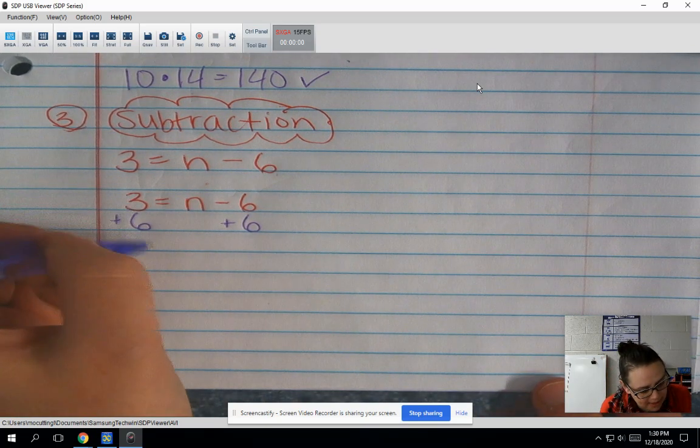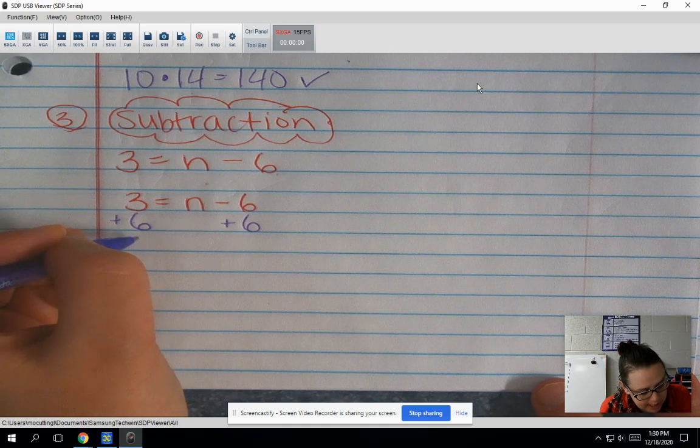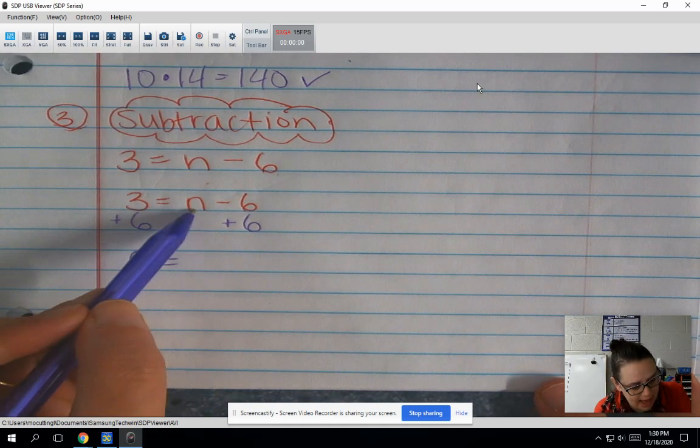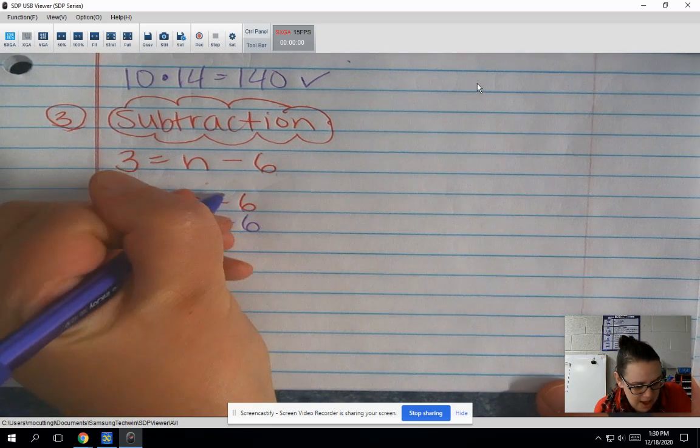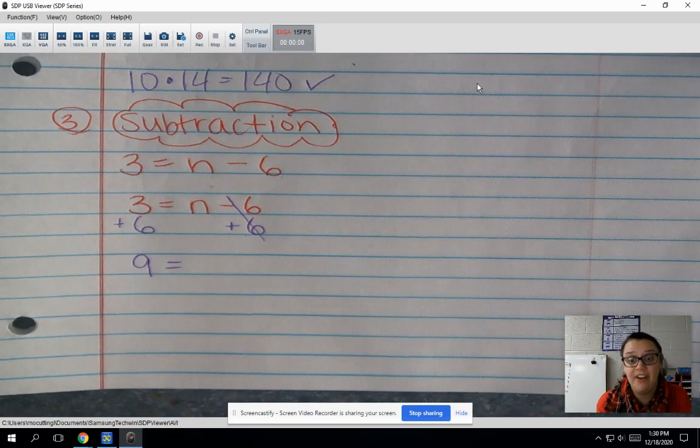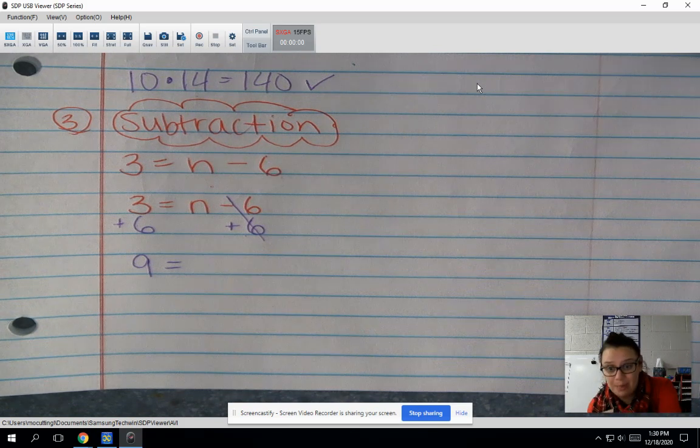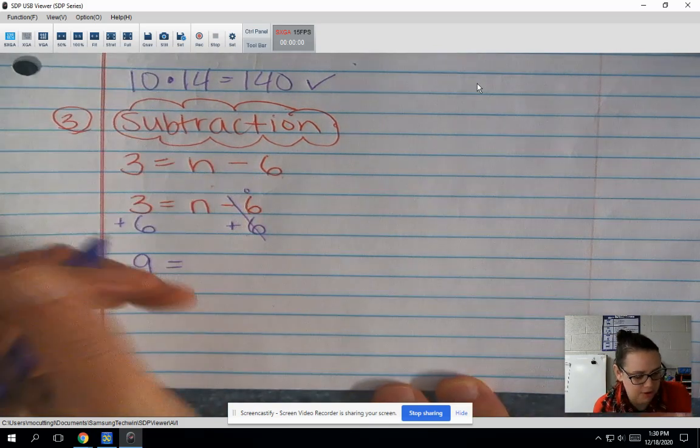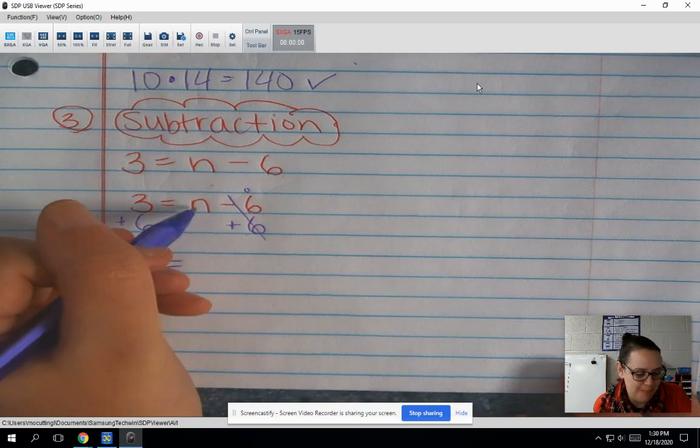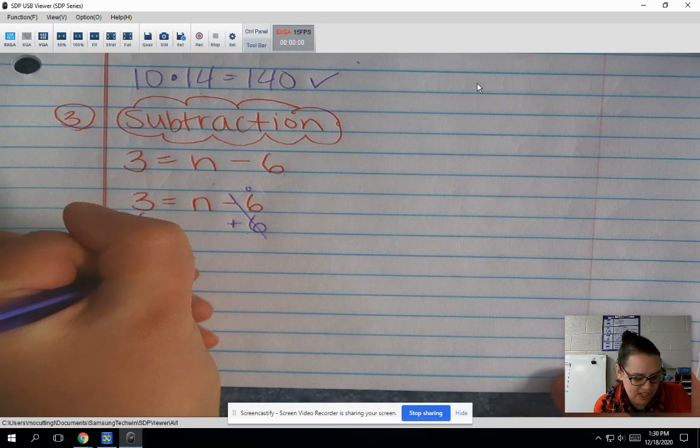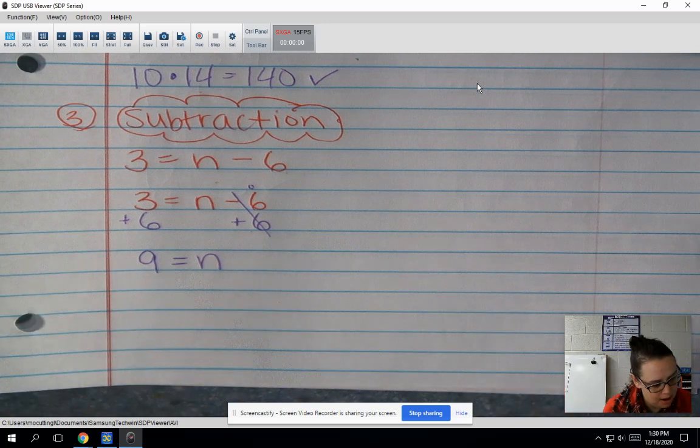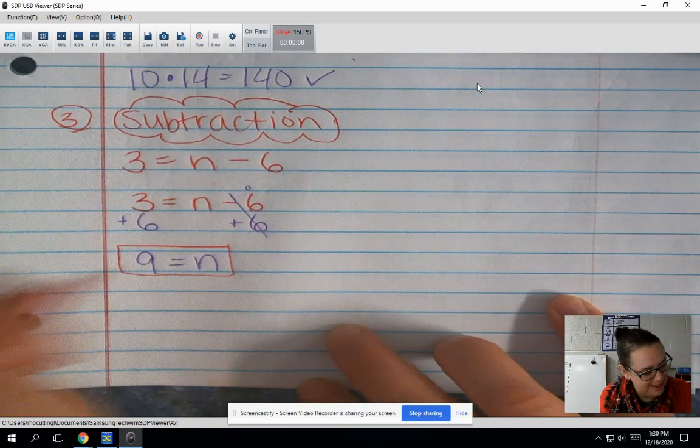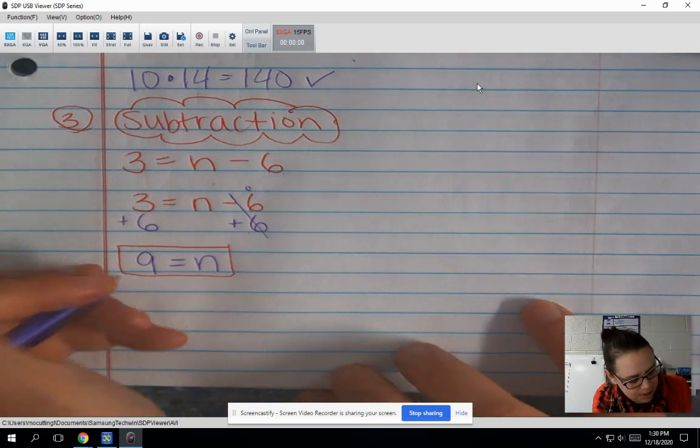So on my left side, 3 plus 6 gives me 9. On my right side, I have n minus 6, then plus 6. That part gives me 0. If I take 6 away and then put it back, I'm left with what I started with. I'm just going to put a little 0 there. So that's actually n minus 0, which is just n. So 9 equals n. Oops, I was supposed to switch back to red there. Pretend that's red. So then I'm going to do my check.